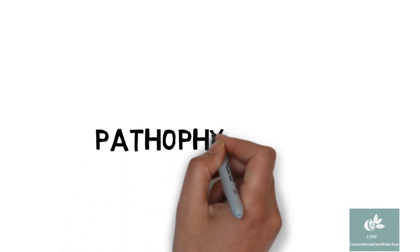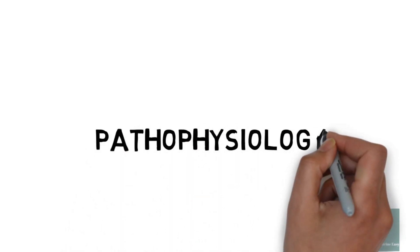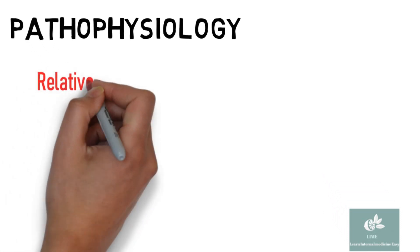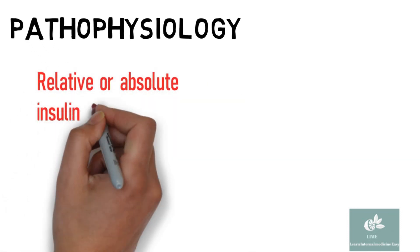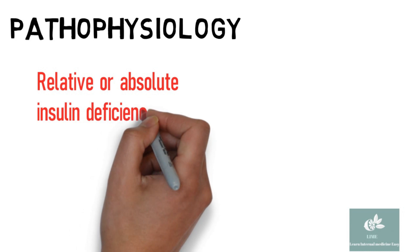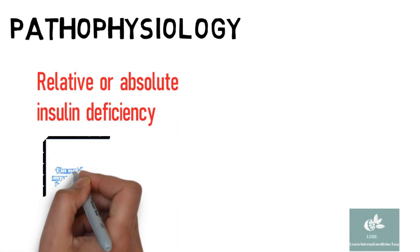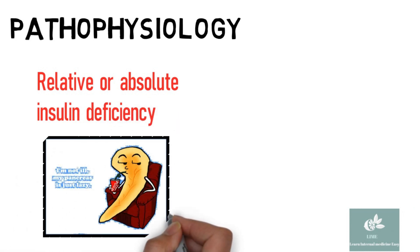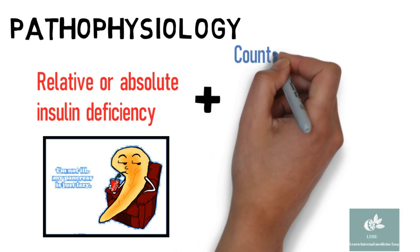First, we will learn about the pathophysiology of DKA. DKA results from relative or absolute insulin deficiency combined with counter-regulatory hormone excess.